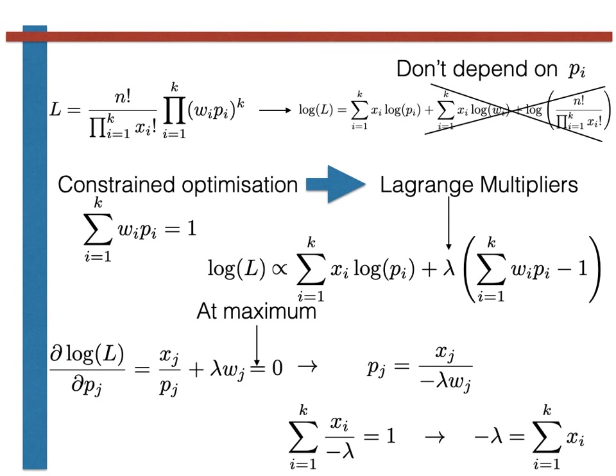We thus find that minus lambda is equal to n as the sum of the counts in all of the bins is equal to the total number of random variables that were generated.